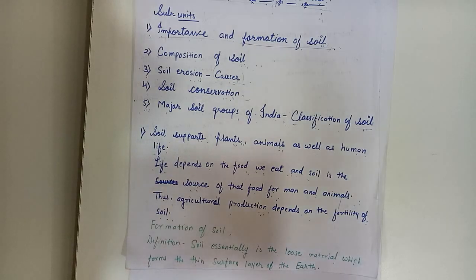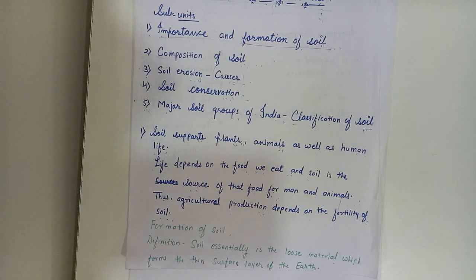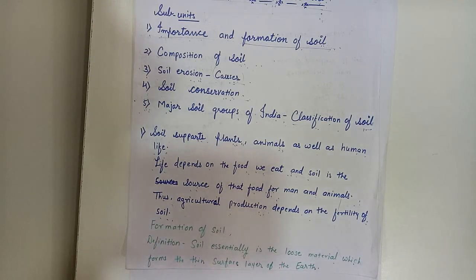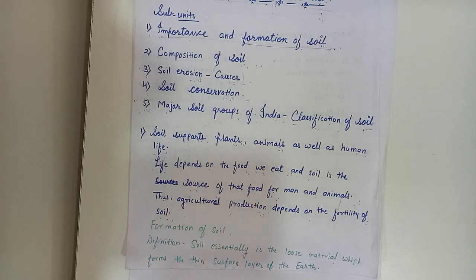So soil, plants, human beings, and animals — all these things are interconnected with each other. If plants are not there, we cannot live and animals cannot live. And if soil is not there, then plants are not possible on the earth. Because of soil we are getting food and we are getting oxygen. That is why we can survive on the earth.